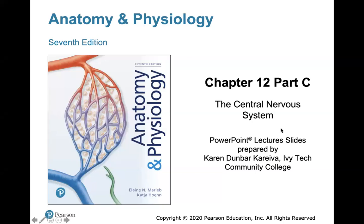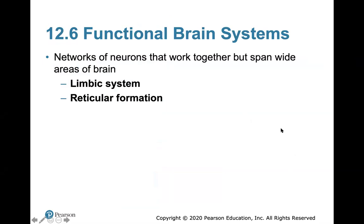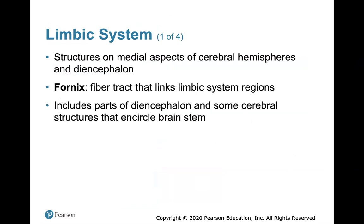Hi class and welcome back to the second half of the lecture on chapter 12. We'll be going over parts C and D. These chapters are a little heavy in the nervous system, so I try to skip over things you don't need to know. We're going to look at functional brain systems, which are networks of neurons that work together but span wide areas of the brain. We have our limbic system and reticular system.